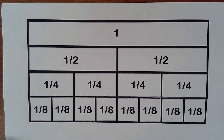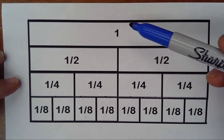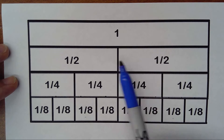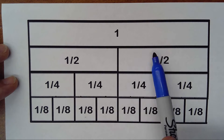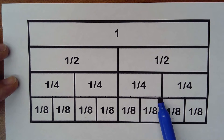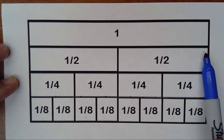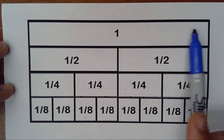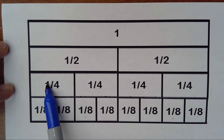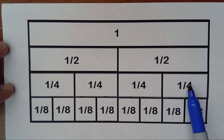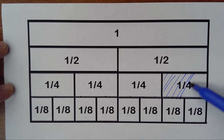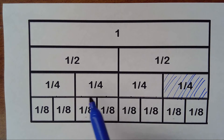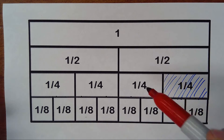Now let's look at a different representation. I have a whole rectangle. I divide it in half — from two parts I take one. I can do the same with each half piece: if I divide it by two it becomes a fourth, because the big rectangle is now divided into four pieces — one, two, three, four. So each piece is one over four.